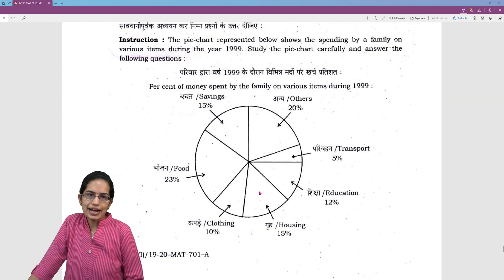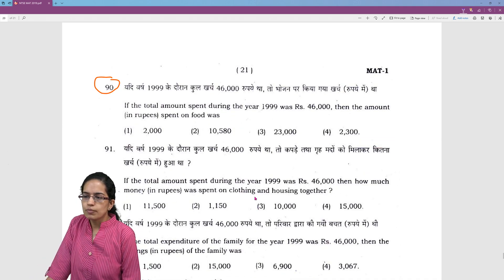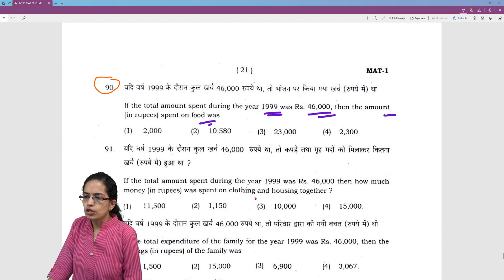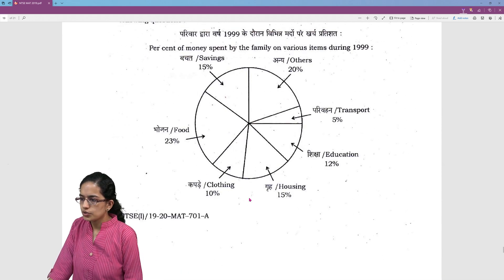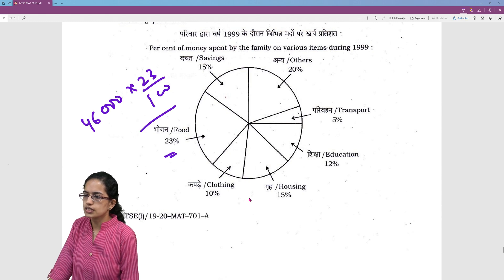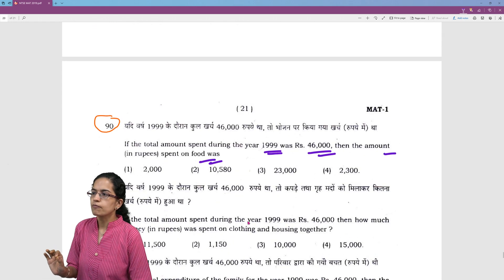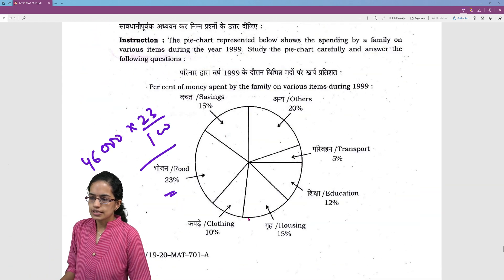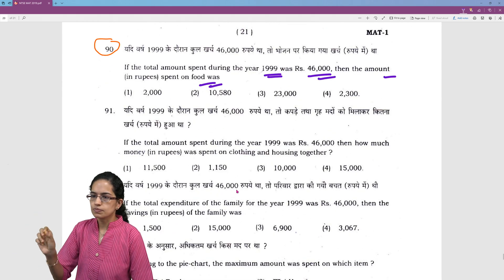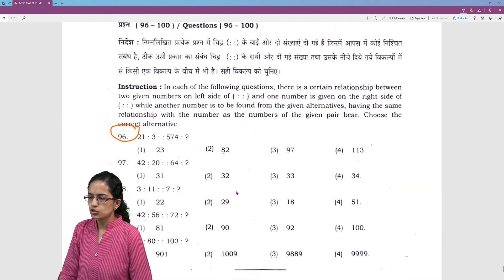Now, based on the pie diagram, again, you have a series of questions. Let's pick up one of the questions here. One of the questions is, the total amount spent in 1999 was 46,000. How amount spent on the food is? So, on the food, you spend 23%. So, 46,000 and 23% of 46,000. I'll simply have to calculate and I'll have the answers there and then itself. So, this is the total expenditure that is there. And of that total expenditure, which is 46,000, 23% is being spent on food items. So, the proportion that is being spent on the food items needs to be calculated.